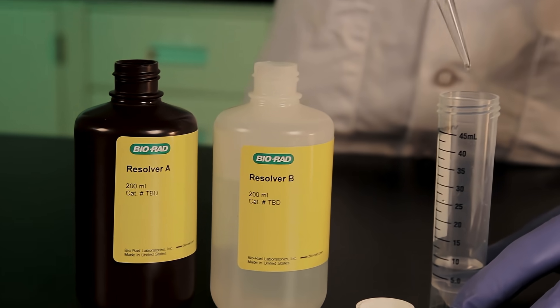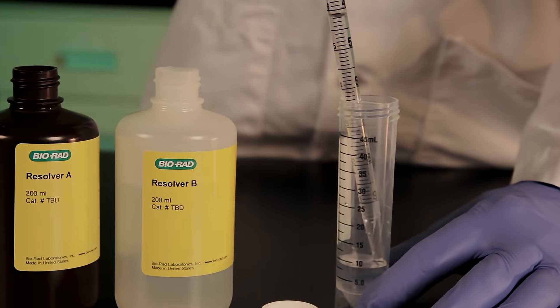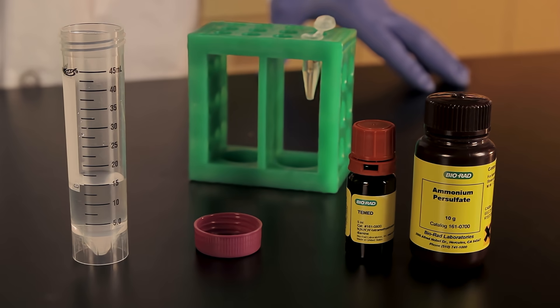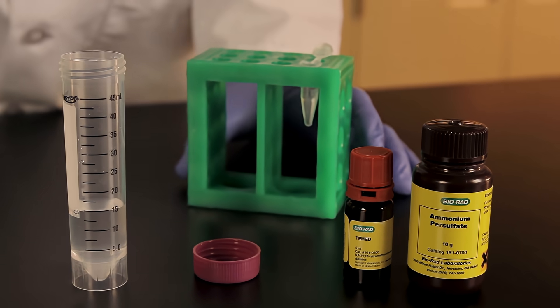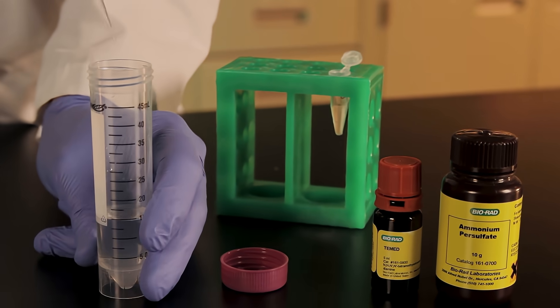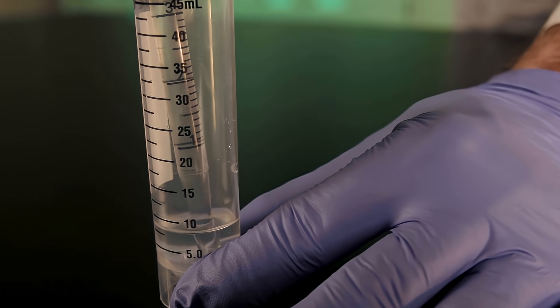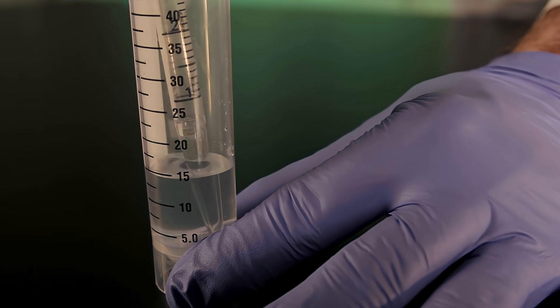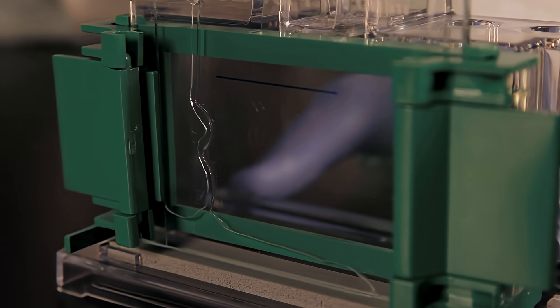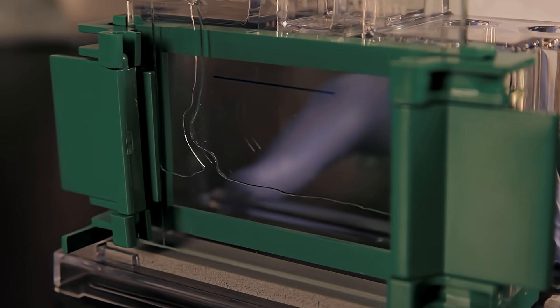Prepare the resolving gel acrylamide solution by combining equal volumes of resolver A and B solutions. Add the appropriate volumes of TEMED and freshly made 10% APS to the combined resolving solution. Mix the solution, taking care to avoid introducing air bubbles. Pour the resolving solution into the cassette smoothly to prevent it from mixing with air.